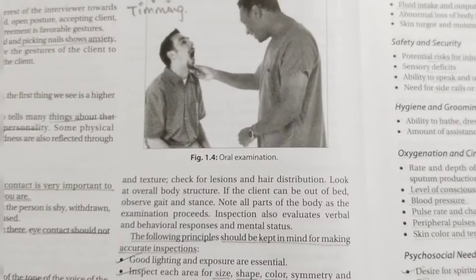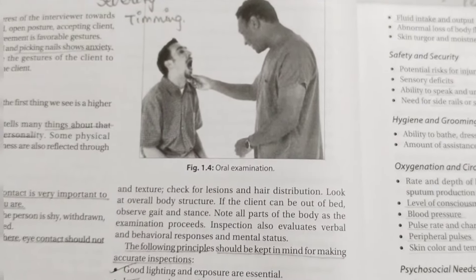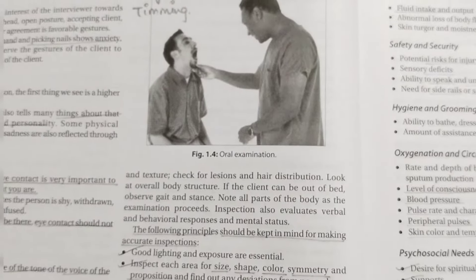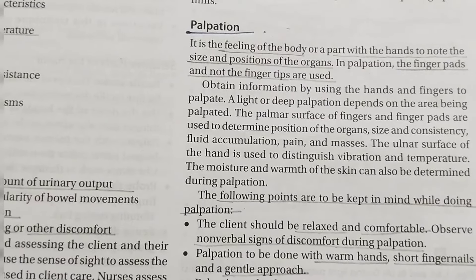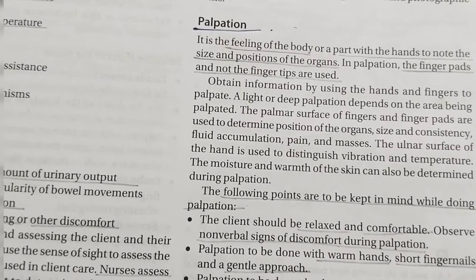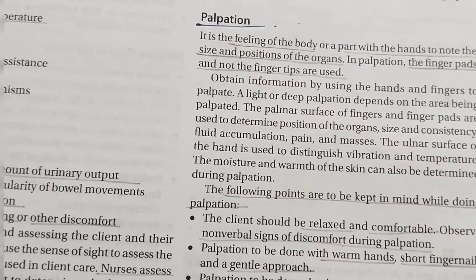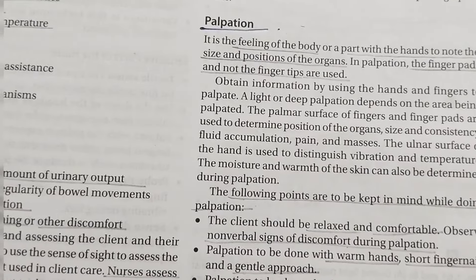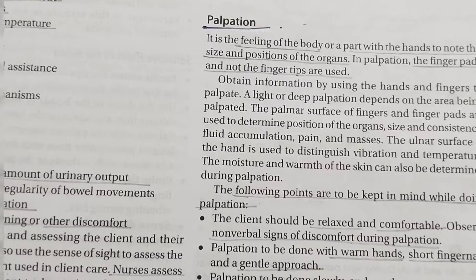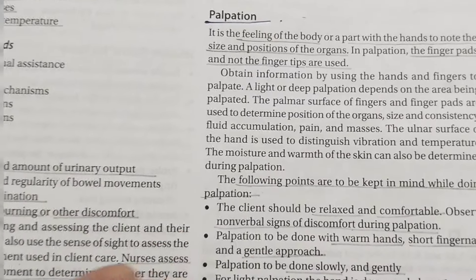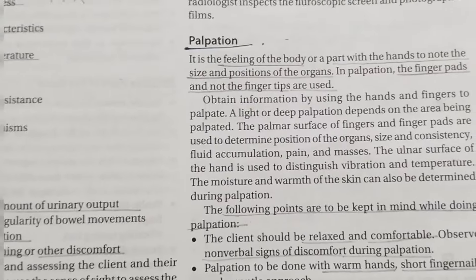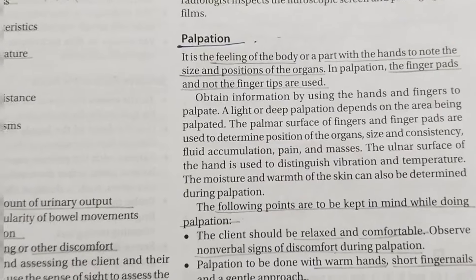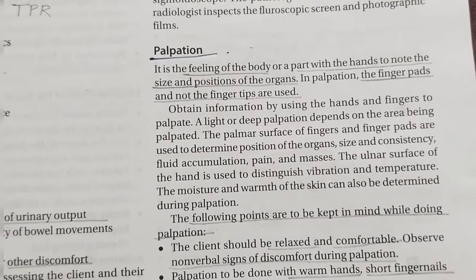For example, in oral examination a healthcare worker uses the naked eye to examine the mouth — that is inspection. The next method is palpation. Palpation means we palpate, meaning you can feel body parts with your hand and feel the position of the organ. The best example of palpation is palpating the pulse — you use your fingers, keep them over the artery, and count the pulse rate.